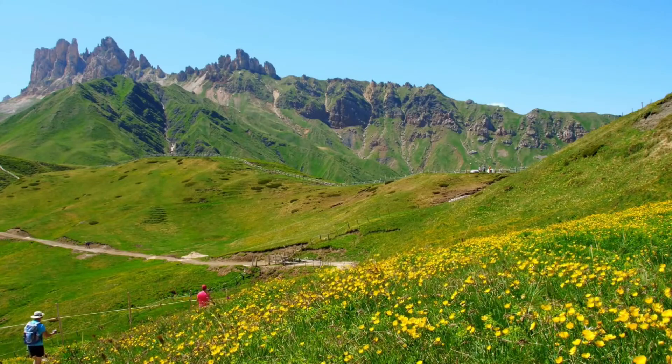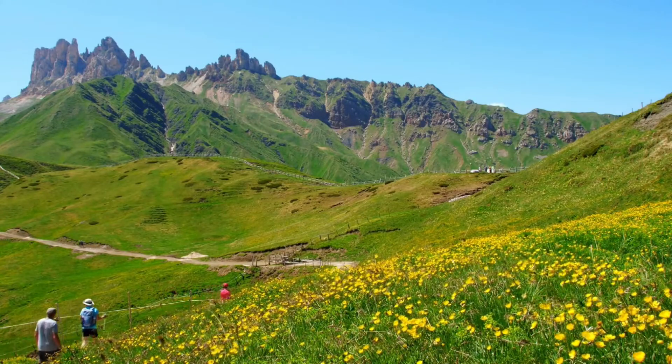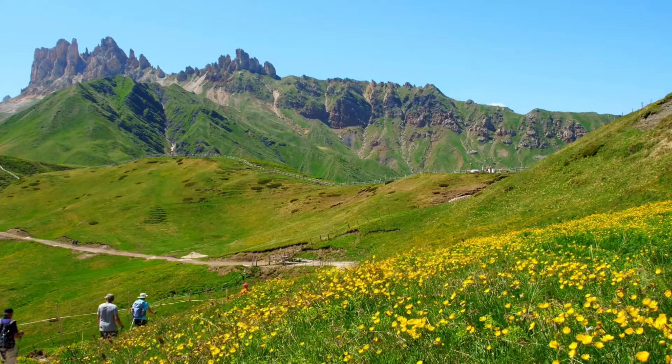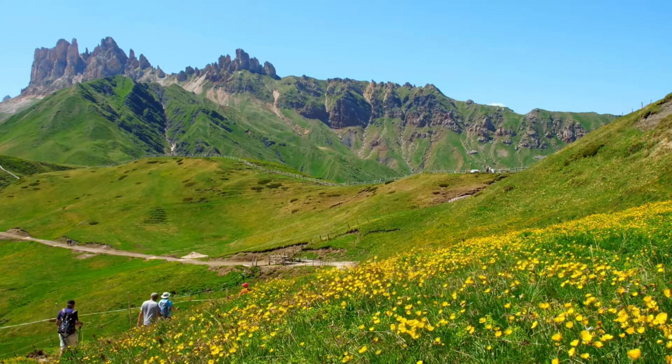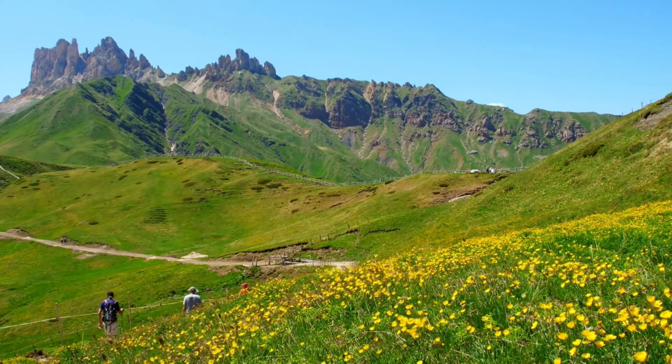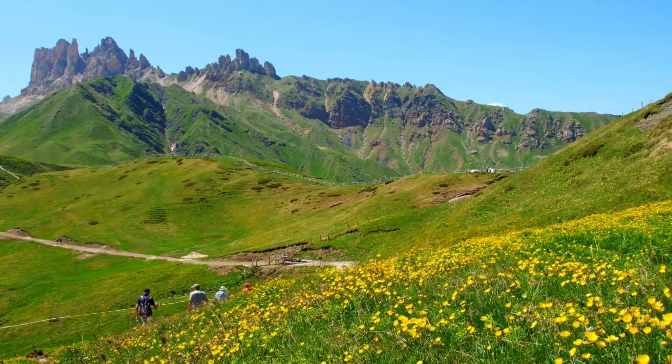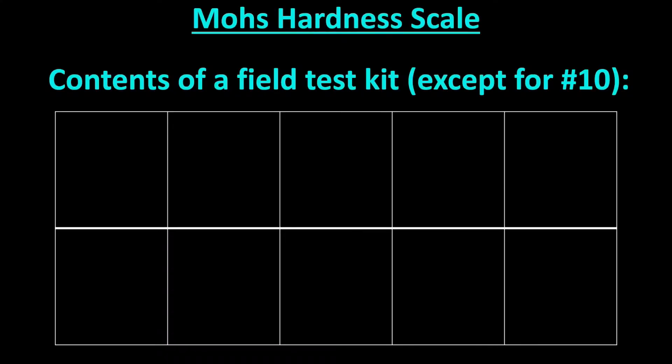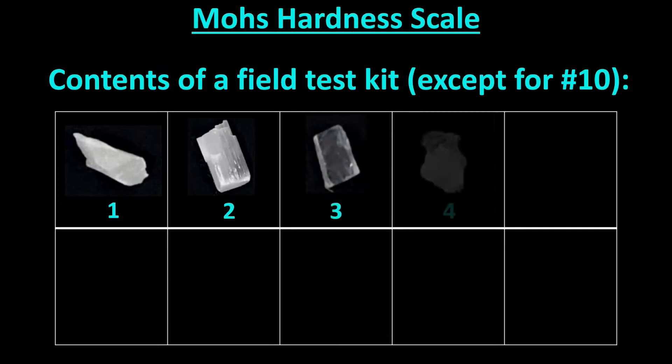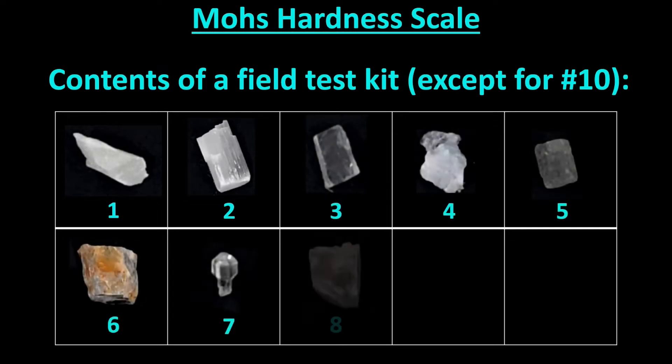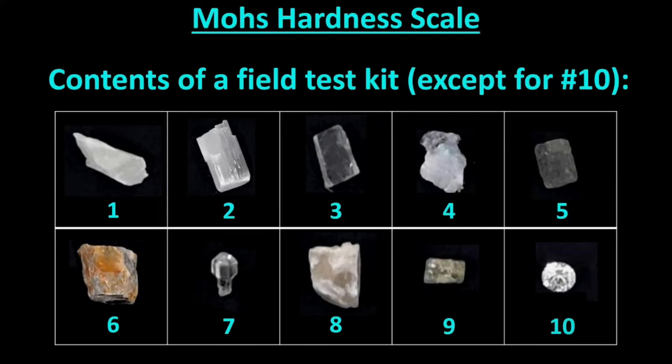When geologists are in fields or elsewhere in nature, they may come across a rock and want to know what it is. One of the tools they can use to identify a rock is called the Mohs hardness scale, which is a scale of 10 naturally occurring rocks. This is a typical kit, except the kit usually does not include the tenth item, because that is a diamond and can be expensive.